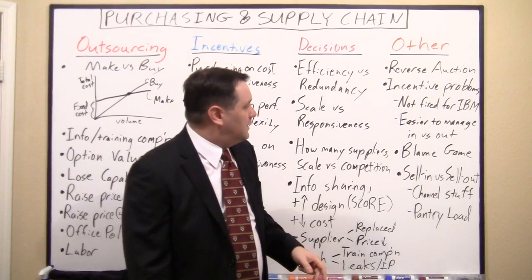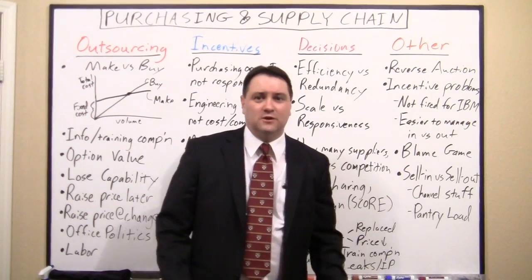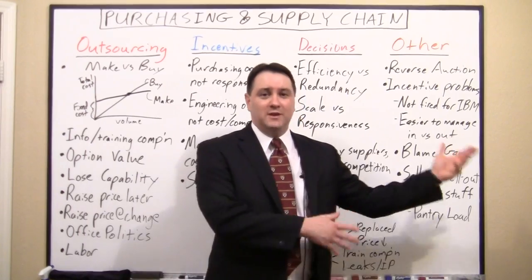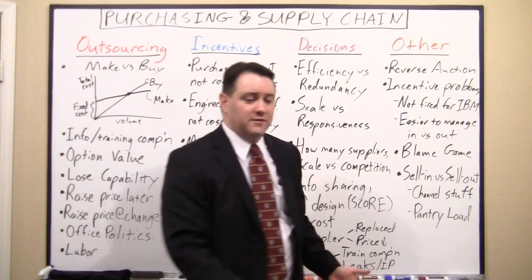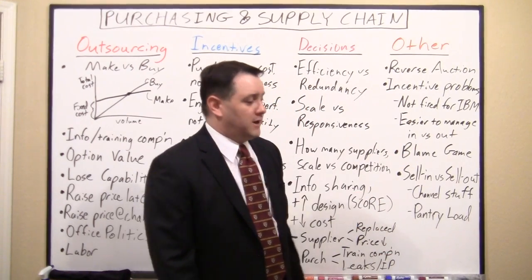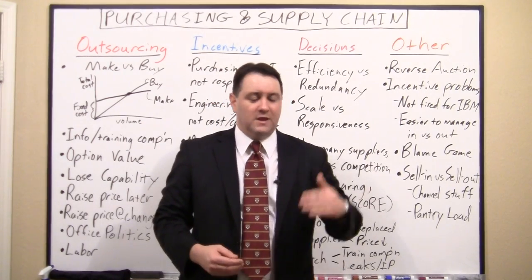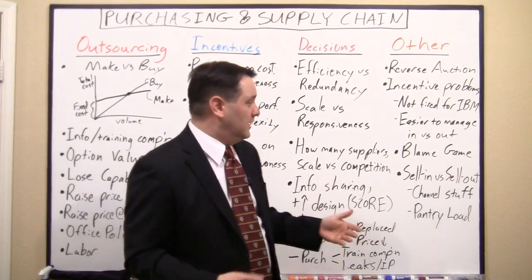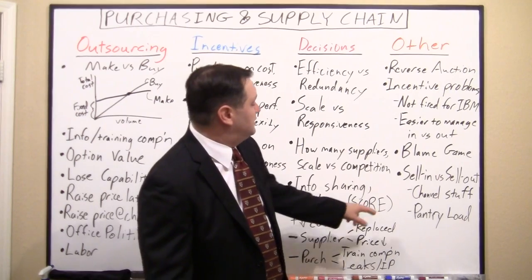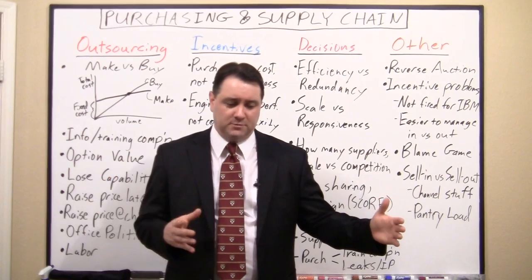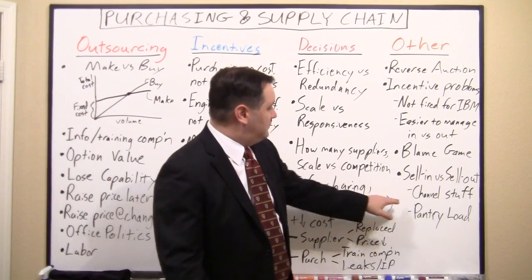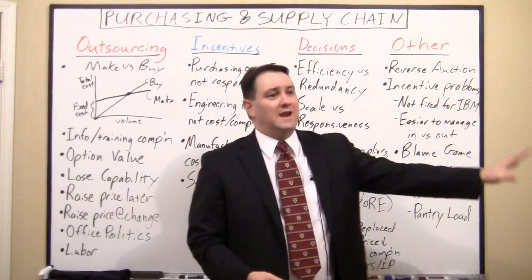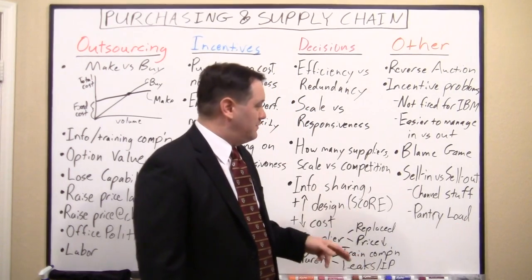Another incentive problem: a purchasing agent might find it easier to lobby their own company to pay more than to get a supplier to lower their price — which is not in the company's interest. You can also run into the blame game: when there's a problem with a part, the supplier always claims it was fine when it left their facility and your factory damaged it, while your factory claims it was bad when the supplier sent it. That's hard to sort out. Also be aware of channel dynamics: if your sales force gets a bonus at month end, they might ship a lot of product and give great deals to stuff the channel — called channel stuffing. Then next quarter, sales will be slow right after that benchmark.